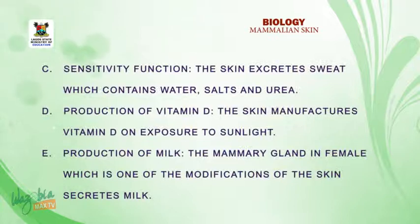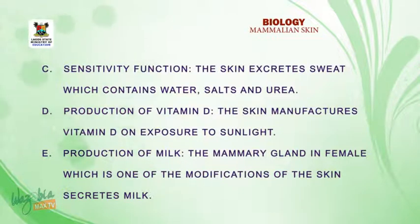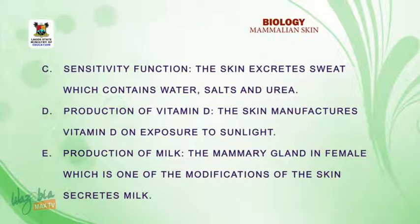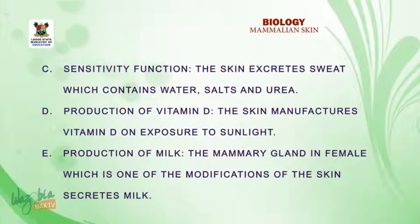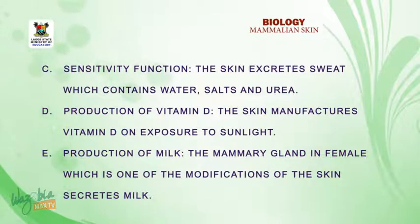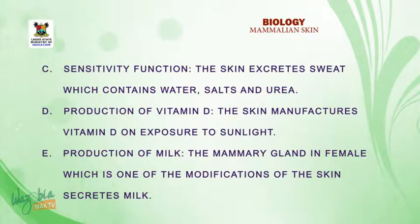Three, the excretory function. The skin excretes sweat, which contains water, salt, and urea. Number four, the skin helps in the production of vitamin D — that is, the skin manufactures vitamin D on exposure to sunlight. Number five, the skin helps in the production of milk. The mammary gland found in mammals is a modification of the skin, and it helps in the secretion of milk.